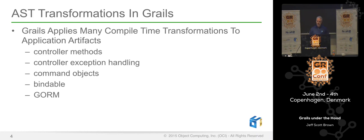Compile-time metaprogramming is generally done in the form of AST transformations. Grails applies lots of compile-time transformations to application artifacts. There's a bunch of interesting stuff that happens to your controller action methods — in Grails, all of your public methods get turned into controller actions, and we're going to look at a lot of the details of what Grails is doing at compile time to all of your controller actions to provide useful functionality that simplifies the code you have to write.